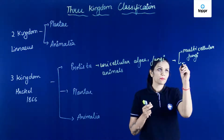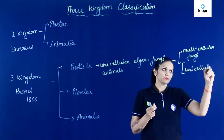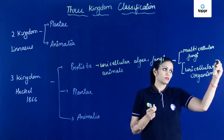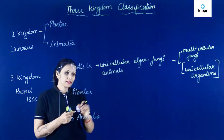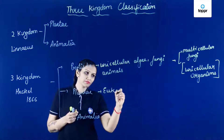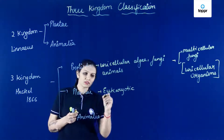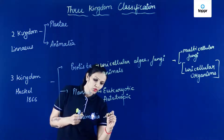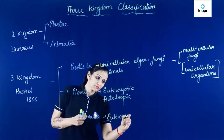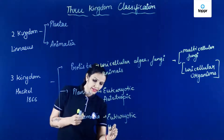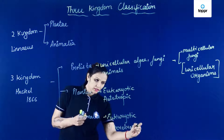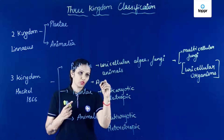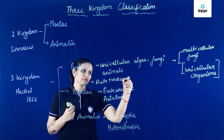In this way, yahan par sirf unicellular organisms ka placement hua. Plantae ke andar unhone kya rakhe the? Eukaryotic forms rakhe, aur jinka mode of nutrition kya tha? Autotrophic. Similarly, Animalia ke andar unhone eukaryotic forms rakhe, jo ki the heterotrophic.